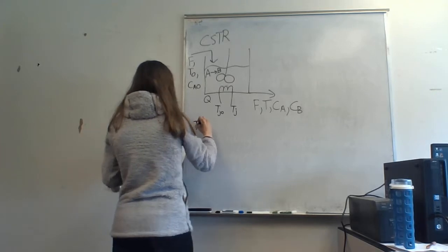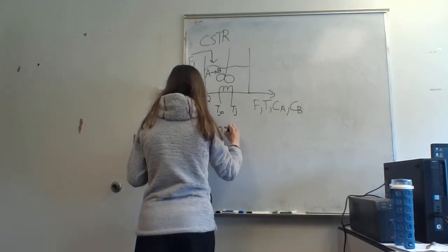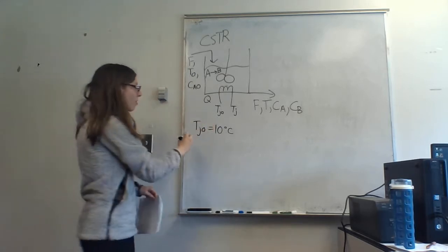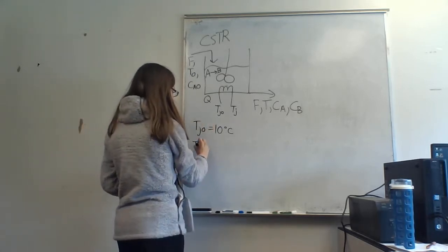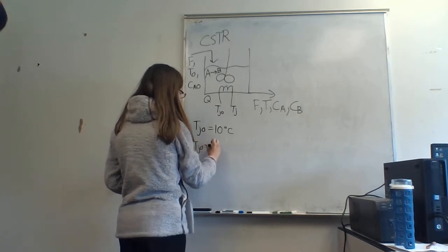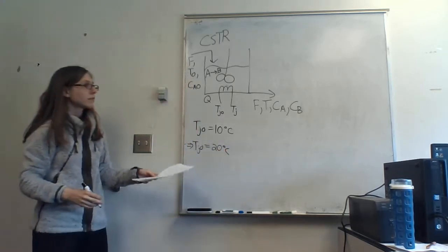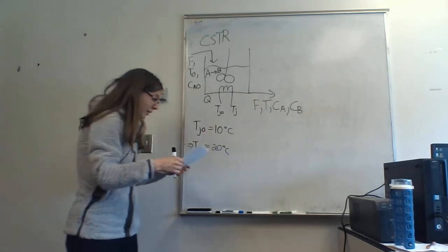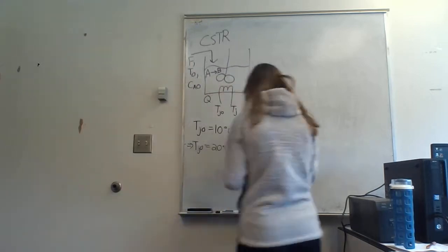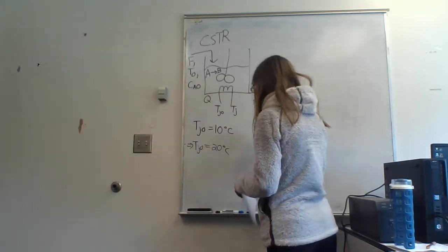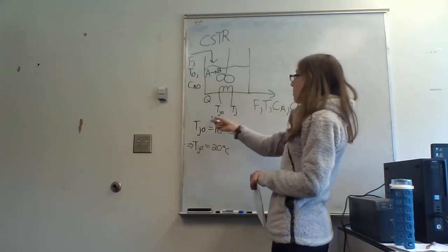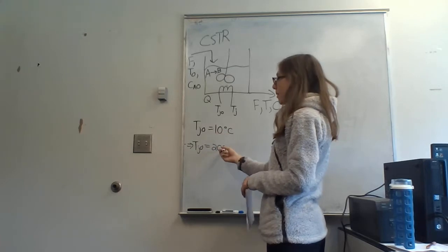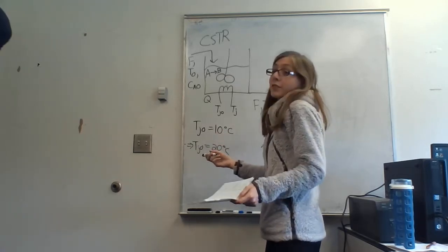Now the intuition on process dynamics. If Tj0 is 10 degrees and then something happens upstream — at some time Tj0 becomes 20 degrees — you'd expect the outlet temperature here is going to change. That's the basic intuition on dynamics. But it's not going to change immediately. We can model Tj0 as changing almost instantaneously — like a step change — and then plot that: time on the x-axis, Tj0 going from 10°C to 20°C.